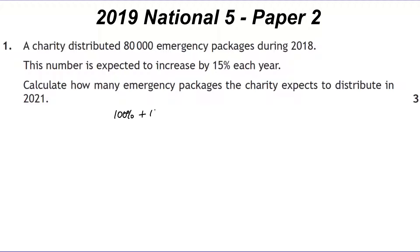We start with an initial value of 100, increasing by 15% per year, so at the end of each year we're at 115 compared to 100 at the beginning. Over three years, we convert to decimal for the calculator: 1.15 times 1.15 times 1.15, which is 1.15 to the power of 3, then multiply by the initial 80,000.